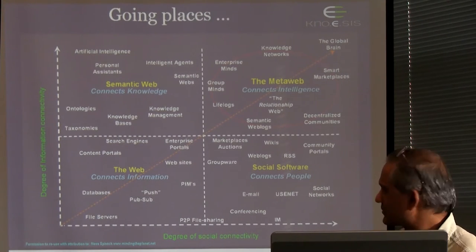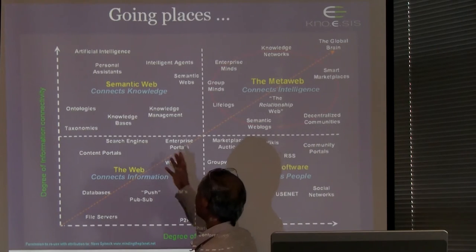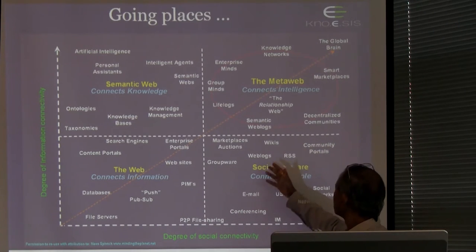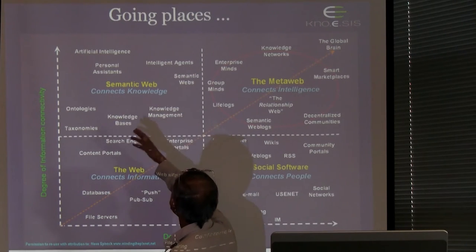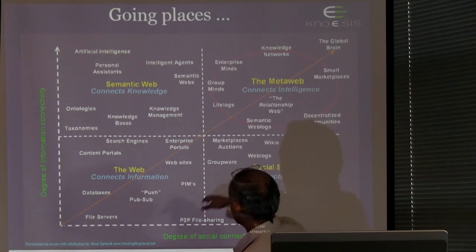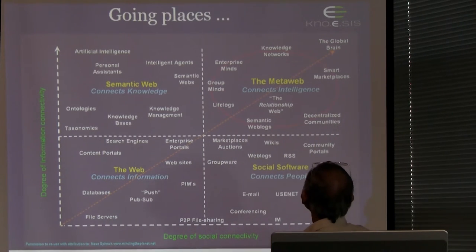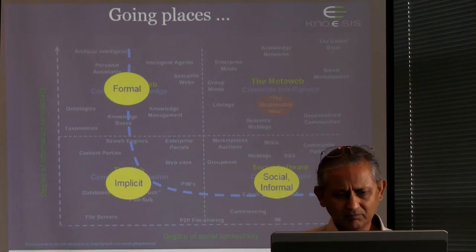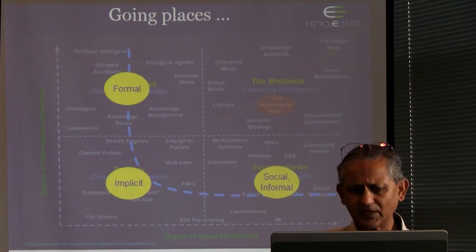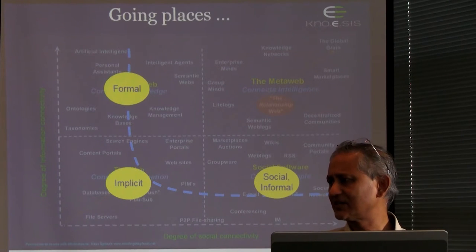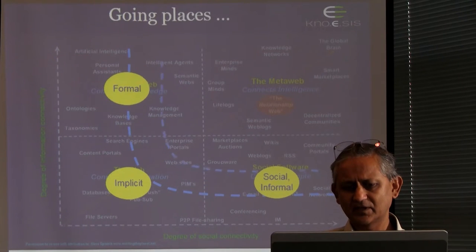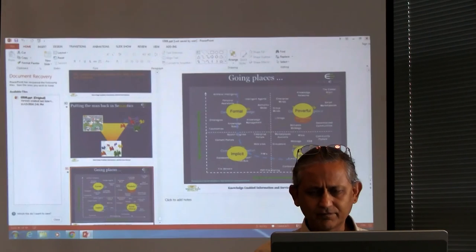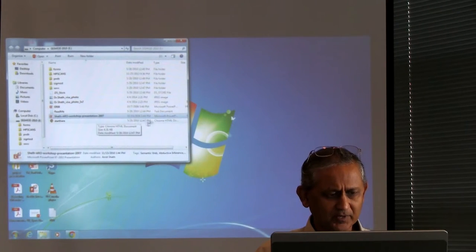There's an interesting way of looking at it: you have the web and web-related technologies, social software, and semantic web. Someone introduced the term 'meta-web' — from Nova Spivak — where semantic and social come together. There are many words used for talking about the same kind of stuff. You have formal modeling, implicit metadata using statistical and machine learning approaches in the web domain, and a lot of social information — all supported together toward a powerful solution.